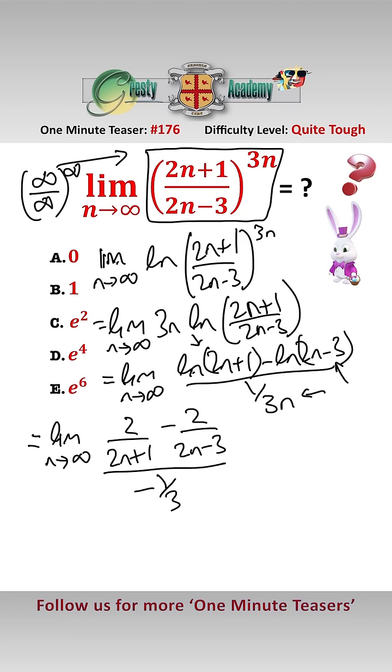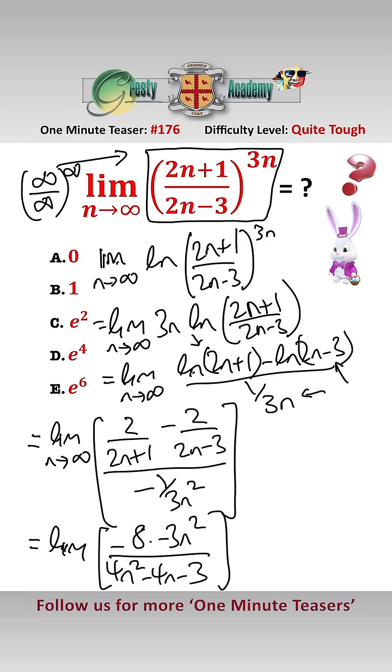Tidying all of this up that gives us the limit of minus 8 times minus 3n squared all over 4n squared minus 4n minus 3. And if we can get rid of that minus sign there, dividing by n squared top and bottom,